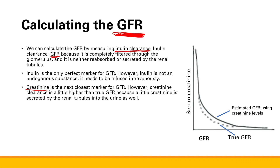However, creatinine has a drawback — creatinine clearance is a little higher than GFR. Why? Because a small amount is secreted by the renal tubules. This is shown in a graph where GFR estimated using creatinine levels — the dark line — is higher than the true GFR, shown as the dashed line, because creatinine is being secreted into the renal tubules.